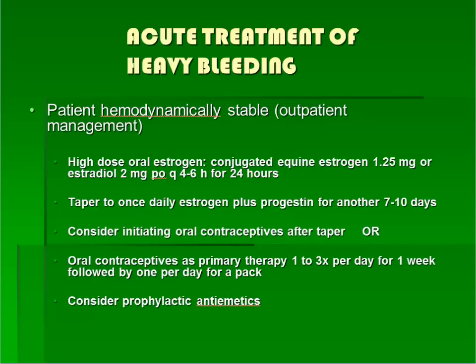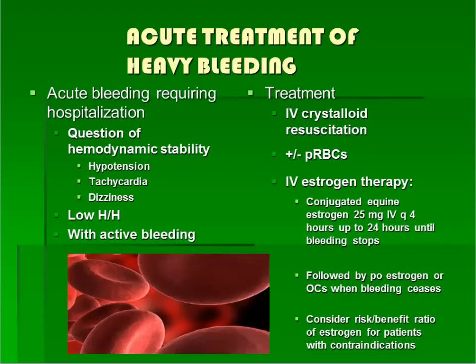Sometimes the bleeding associated with anovulation or other etiologies can be heavy. These patients may be seen in the clinic or in the emergency department. The first consideration is whether the patient is hemodynamically stable, determined by visualizing the patient and checking vital signs. If the patient is hypotensive or tachycardic, check orthostatic vital signs with blood pressure and pulse in the supine, sitting, then standing positions. If the patient is orthostatic, this indicates hemodynamic instability. Patients with heavy bleeding who have a stable blood pressure and pulse can usually be treated on an outpatient basis with oral estrogen or birth control pills. If the patient is not hemodynamically stable, consult a physician and resuscitate with fluids and possibly packed red blood cells. If uterine bleeding is active, initiate therapy to stop the bleeding with high-dose intravenous estrogen.